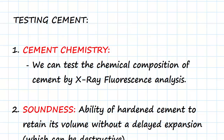The first characteristic we'd want to test is cement chemistry. This is about the percentage of the cement made up of tricalcium silicate, dicalcium silicate, tricalcium aluminate, and tetracalcium aluminoferrite, also gypsum, and other specific details. We can test the chemical composition of cement by using X-ray fluorescence analysis.